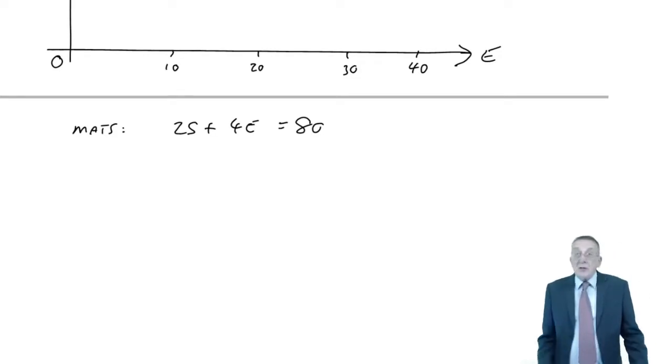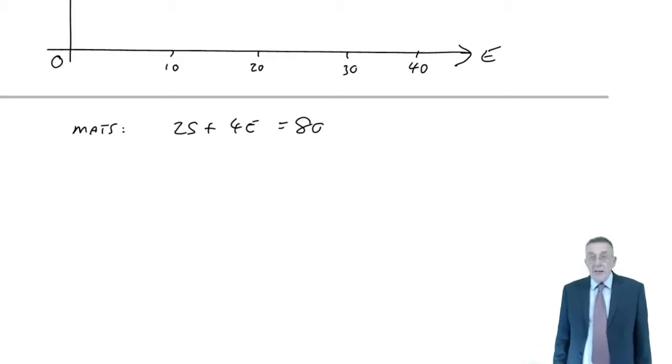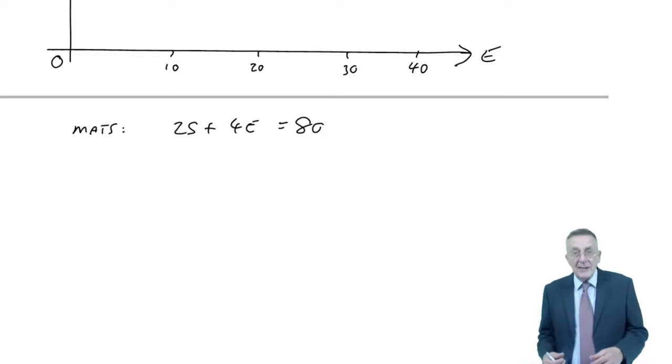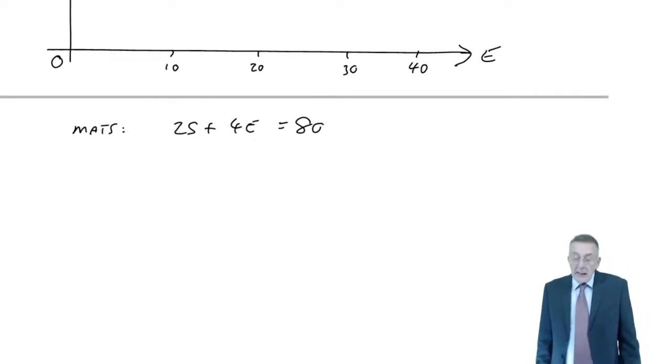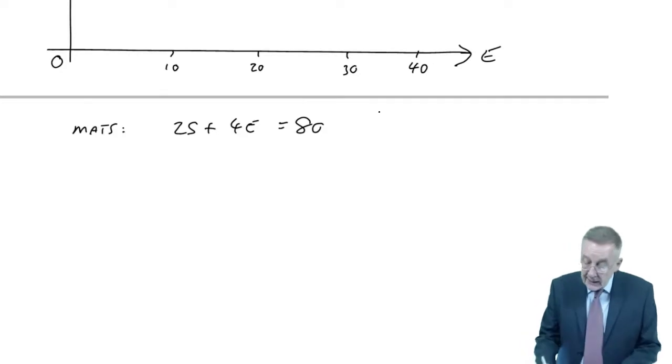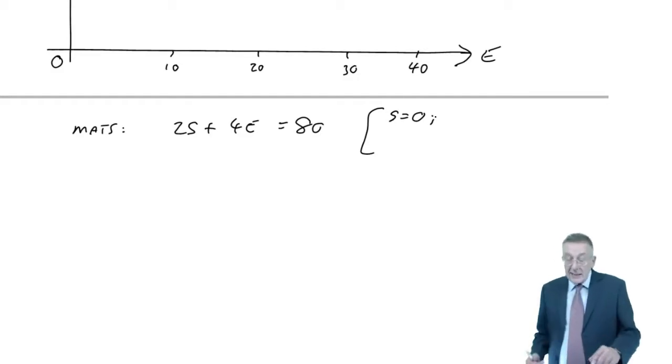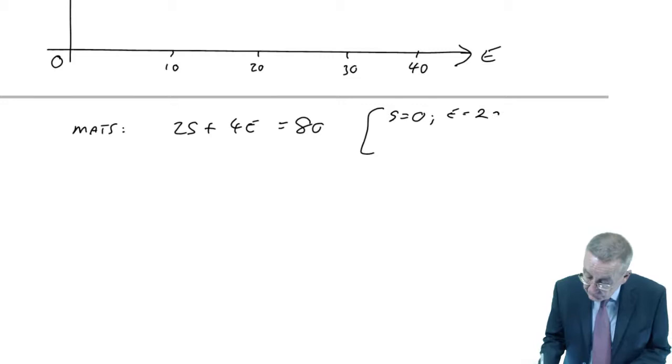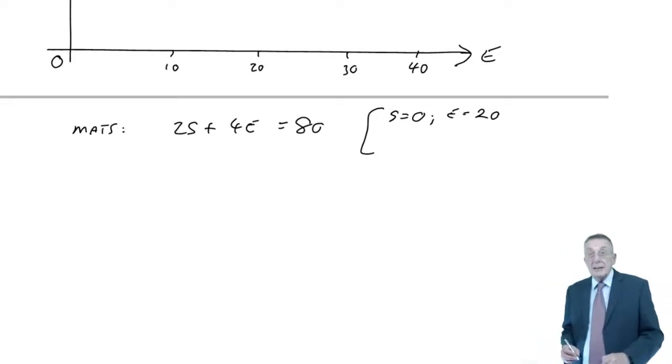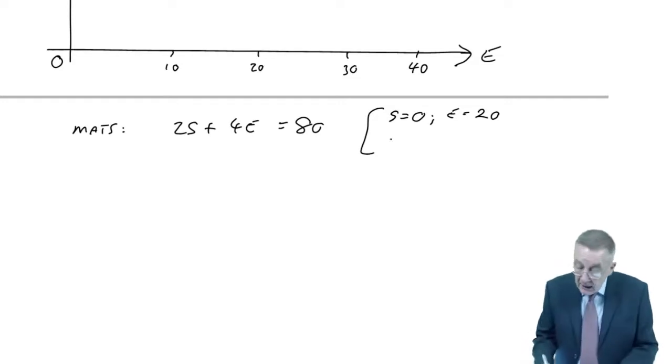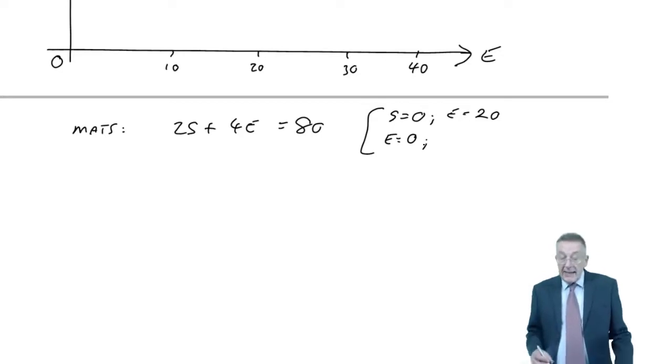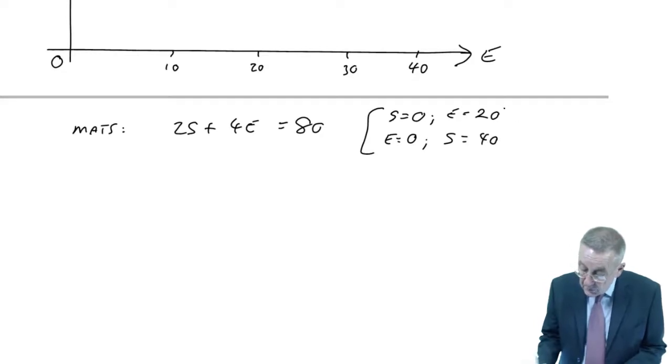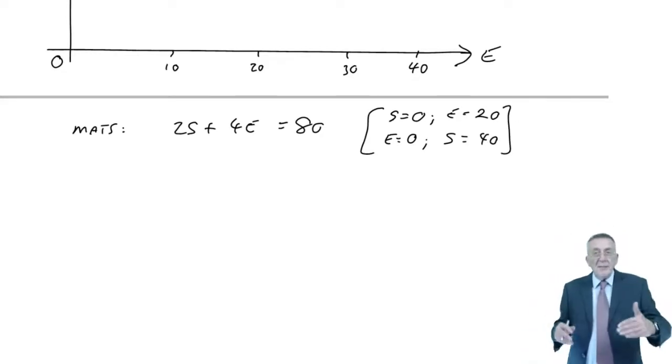Now, you should know from school that any equation of that form, where you've no S squareds or S cubes or anything, will be a straight line. And to draw the graph of a straight line, the easiest way is to say, well, if S were equal to 0, what would E be equal to? Well, 4E would be 80. E would therefore be 20. Now, that'll give us one point on the line. For a second point, what happens if E was equal to 0? If E was equal to 0, 2S will be 80. S, therefore, would be equal to 40. And we need two points, because two points picks a line.